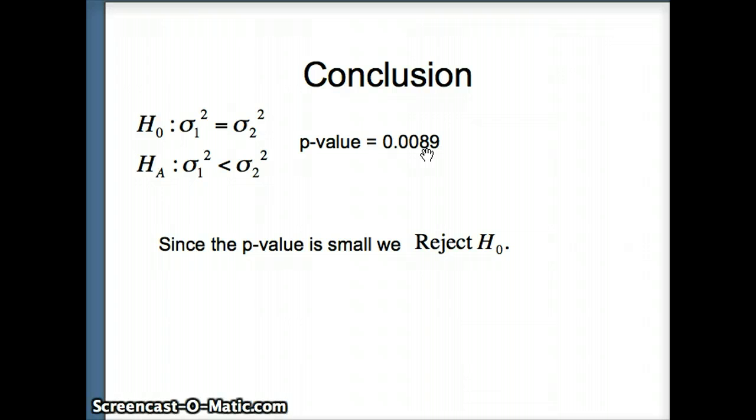Maybe we cannot assume that H0 could be true, because the likelihood of getting numbers this extreme by random chance is so low. So maybe it wasn't just random chance.